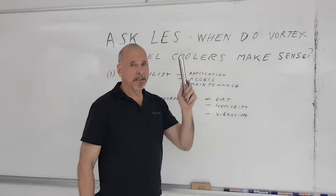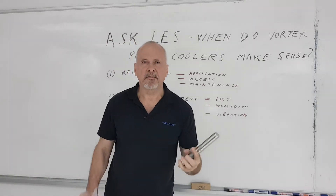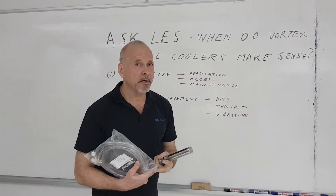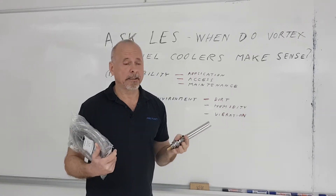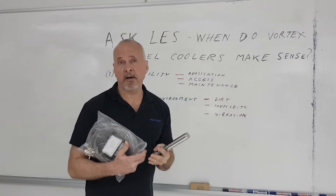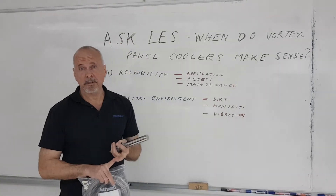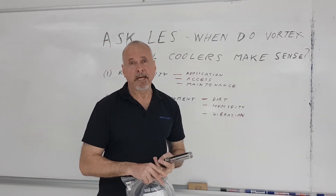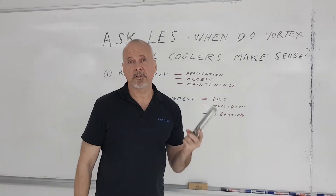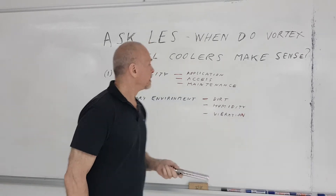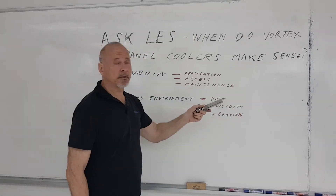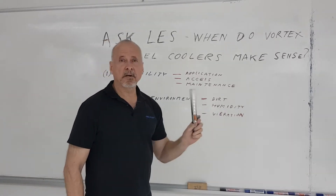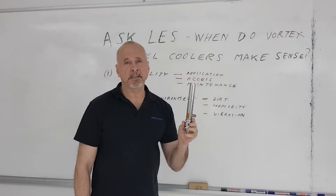Finally, vibration. If the factory environment has a lot of vibration spreading to equipment, that's going to affect the life of the air conditioner, meaning you'll probably have to replace the refrigerant — the CFC — far more often. Not only does that affect the environment, it's also an extra cost, downtime, and more maintenance. Those factors more than offset the cost of the extra energy required to operate a compressed air panel cooler. With the factory environment, consider the dirt, the humidity, and the vibration — the more all these occur, the more sense it makes to use a vortex tube operated panel cooler.